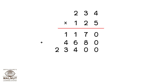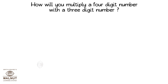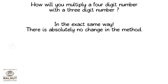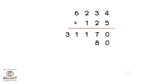Then we add up the numbers and get the final product. How will you multiply a four-digit number with a three-digit number? In the exact same way — there is absolutely no change in the method. Let us try it out: 6,234 into 125.